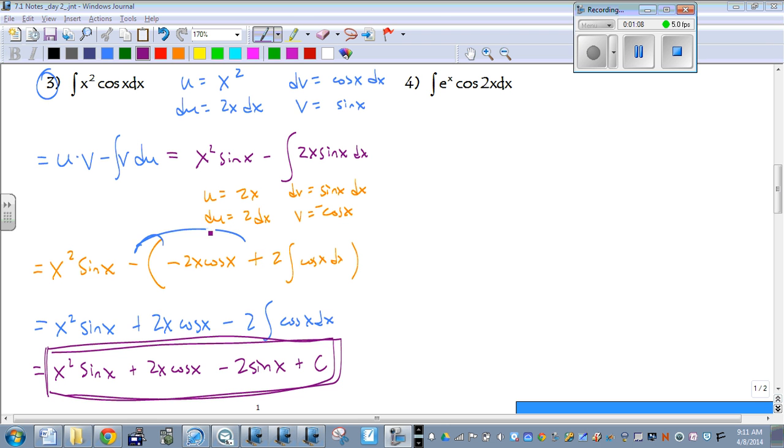So like I said, we have to distribute that, which gives us plus and then a minus here, and the antiderivative of cosine is sine. So we end up with x squared sine of x plus 2x cosine of x minus 2 sine of x plus c.